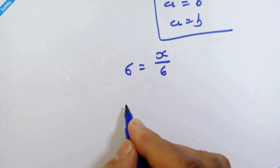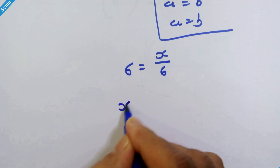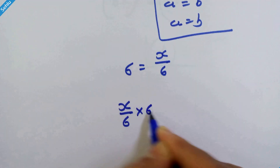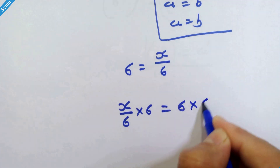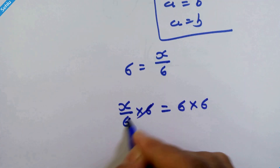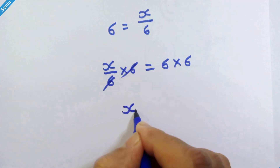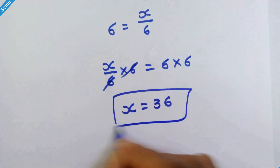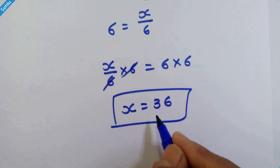Multiply 6 on both sides. So we have x upon 6 into 6 is equal to 6 into 6. These two will be cancelled. So x is equal to 36 is our answer. Let's put this in the main equation.